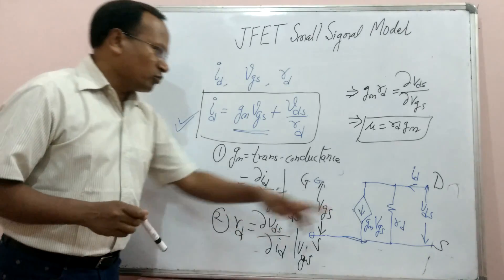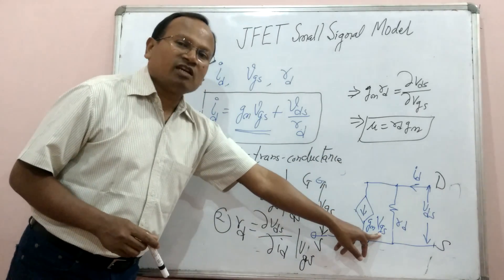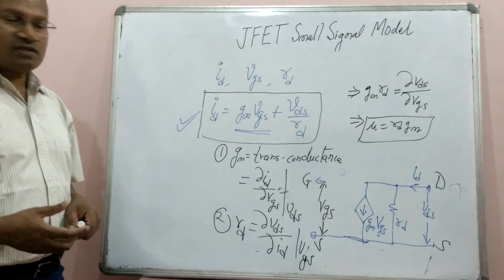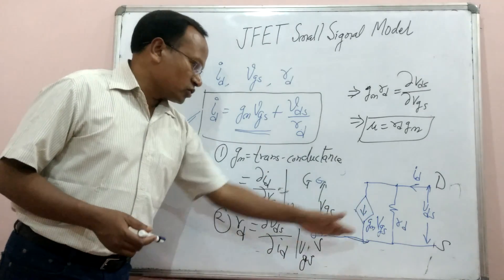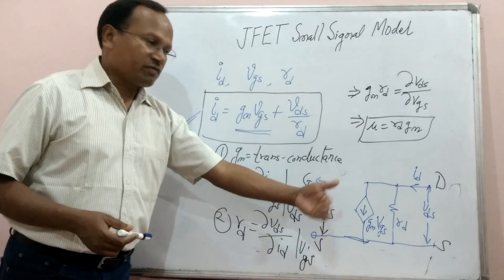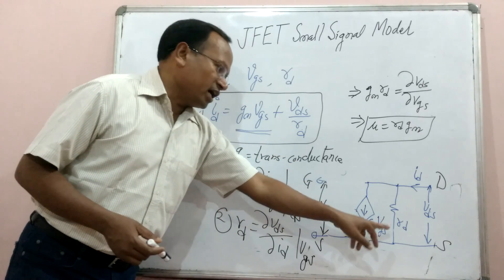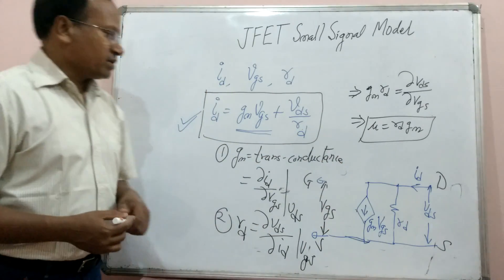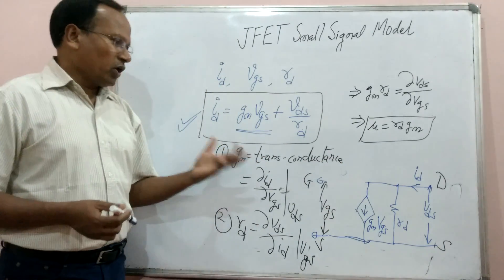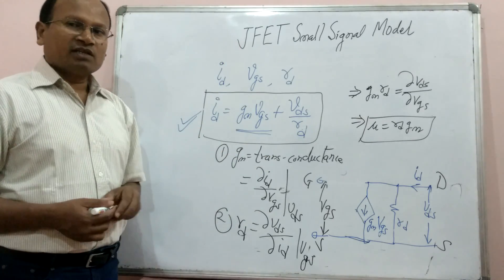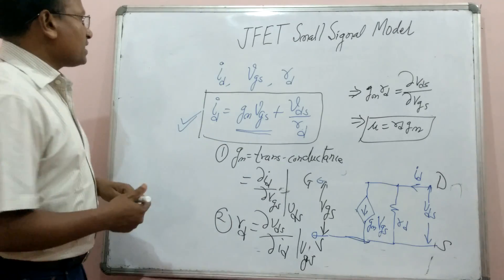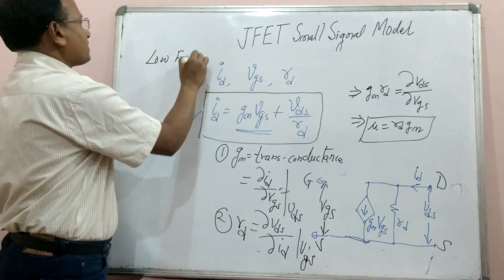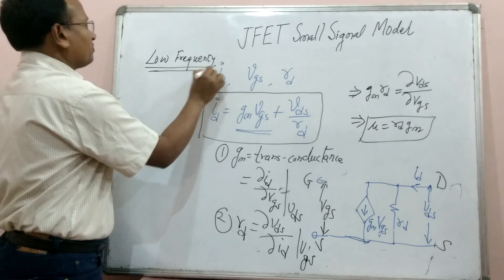We observe that the output drain current ID is controlled by gate-to-source bias voltage VGS, which is the input voltage — this is why we call JFET a voltage-controlled device. Comparing with common-emitter BJT, IC is controlled by base current IB, making BJT a current-controlled device. One more important point: this small signal model is discussed at low frequency — it is a low-frequency model.